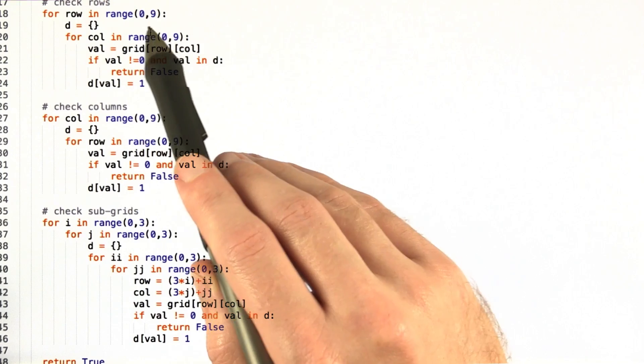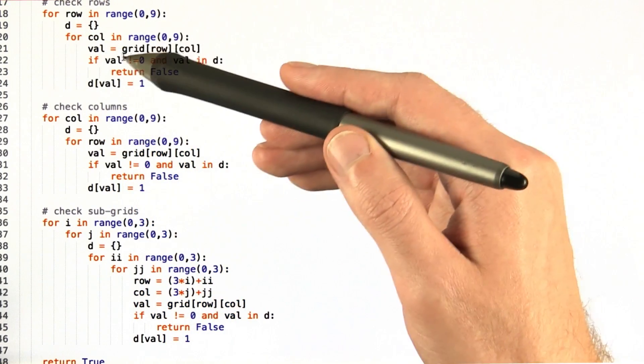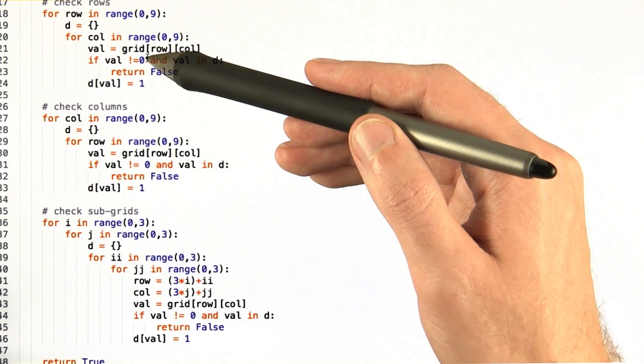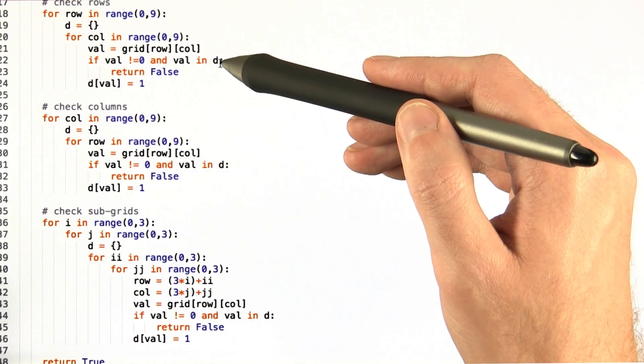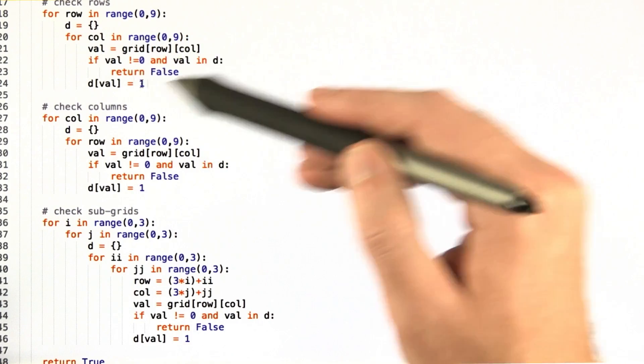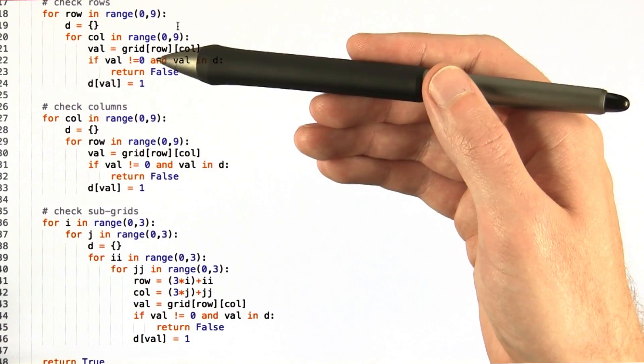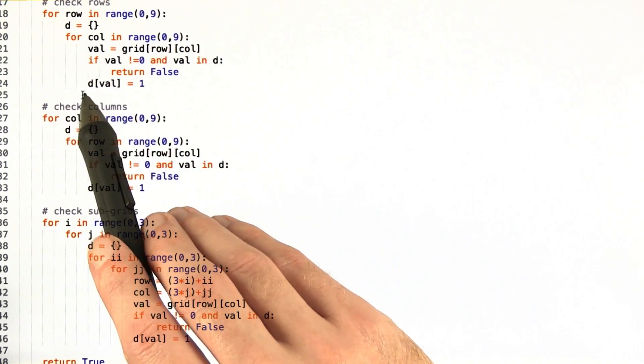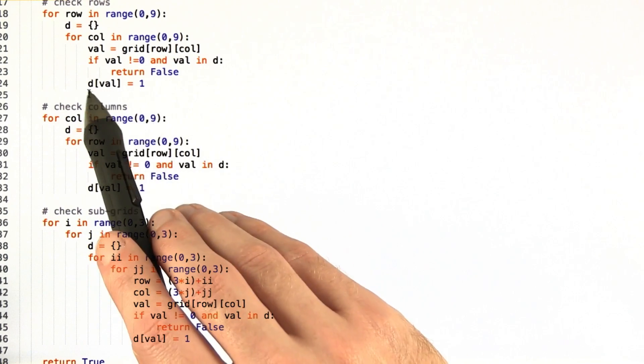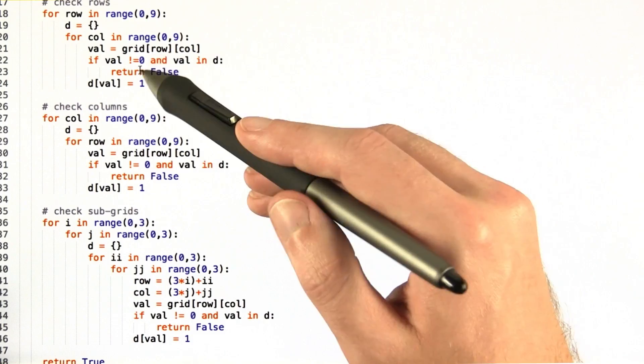First, we check the rows from 0 to 9 and we instantiate a dictionary and we check all the values. If the value isn't 0 and the value is already in D in the dictionary, then we return false immediately because we've already found this in the row. So it shouldn't be there. We should only have this in there once. And then we put the value in D if we don't return and move on.